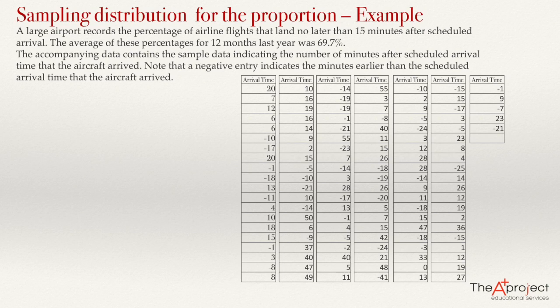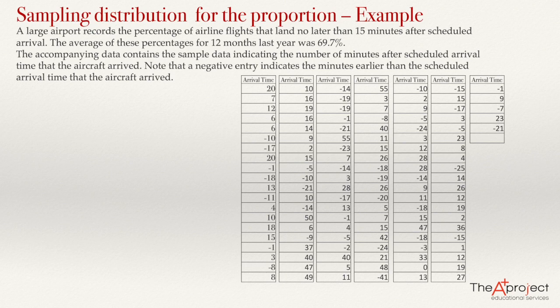In the present video I will be solving a problem related to the sampling distribution for the proportion. The problem says a large airport records the percentage of airline flights that land no later than 50 minutes after a scheduled arrival. The average of this percentage for 12 months last year was 69.7 percent. The accompanying data contains the sample data indicating the number of minutes after scheduled arrival time. Note that a negative entry indicates the minutes earlier than scheduled arrival that the aircraft arrived. Here is the data and we have two questions.